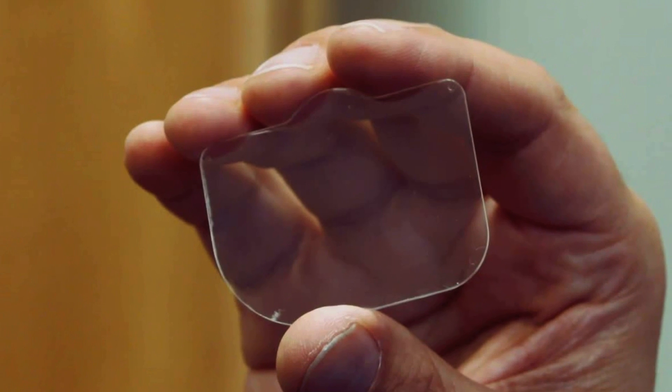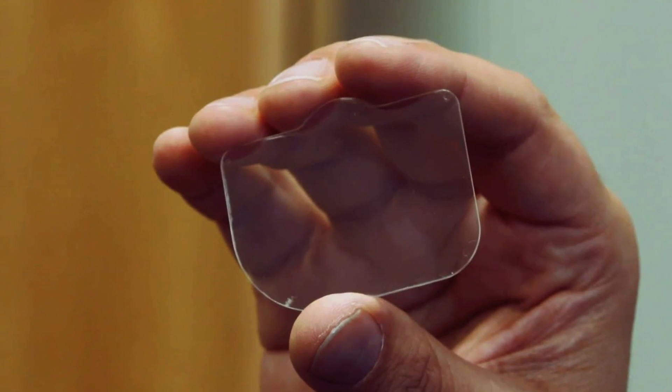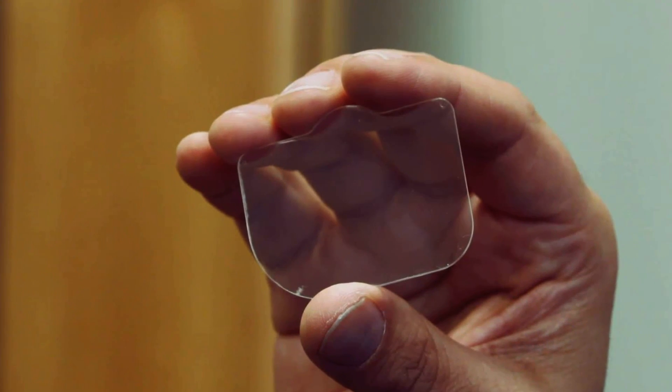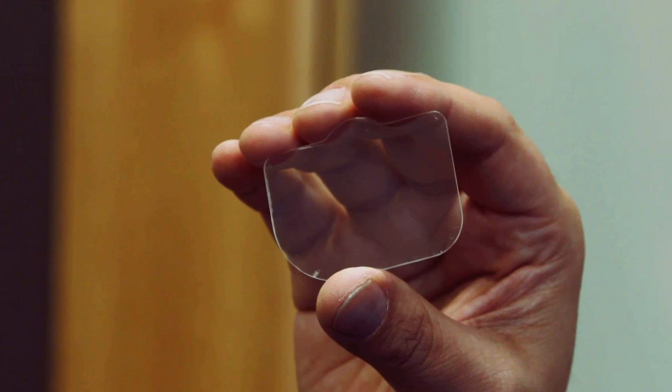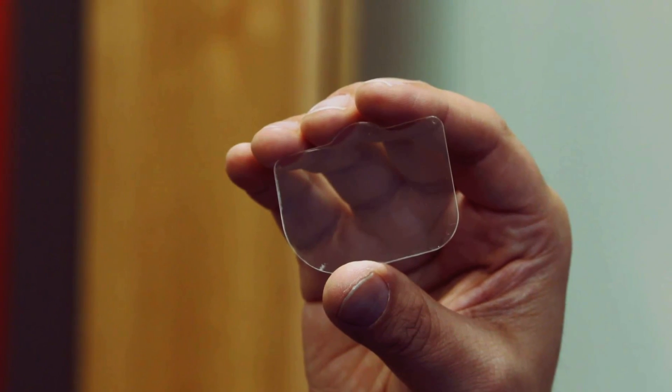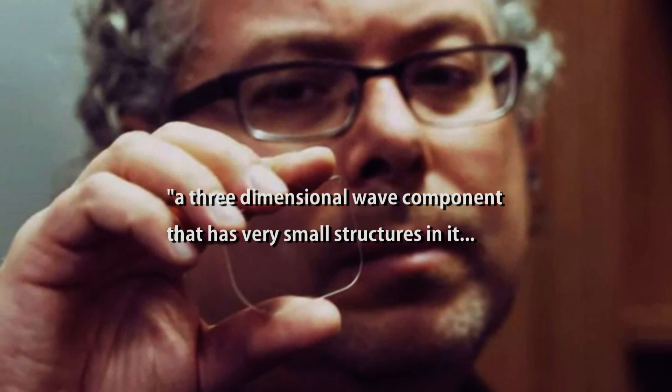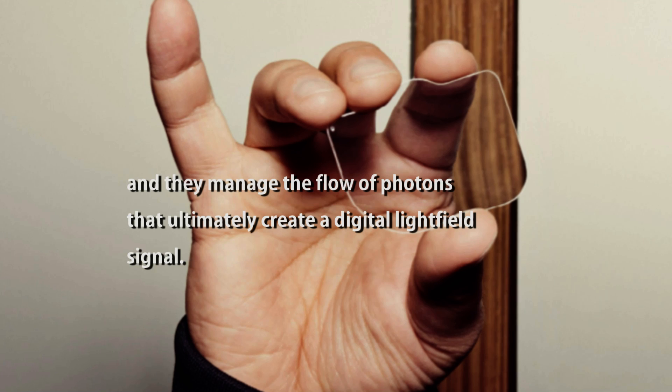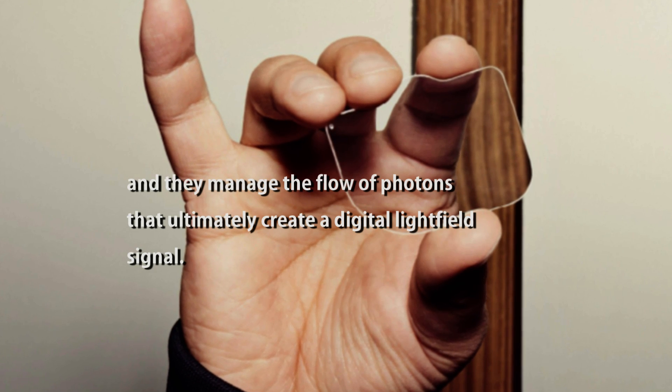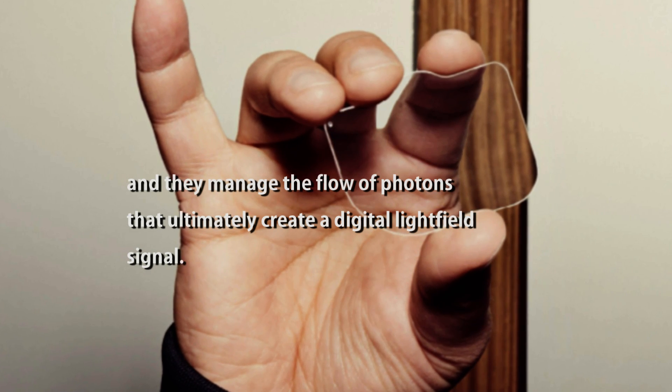So the name alone is enough to scare most people off. How about we get a direct quote on what it is from the company themselves? Here's one from Magic Leap CEO, Rony Abovitz. He describes it as, quote, A three dimensional wave component that has very small structures in it. And they manage the flow of photons that ultimately create a digital light field signal, end quote. Well, what the heck is that?